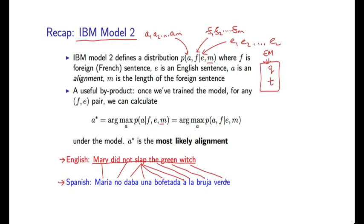Notice that under these IBM models, these alignments have the following property: for each foreign word, we have an alignment to a single English word. So for each foreign word, we pick out a single English word to which we're aligned.